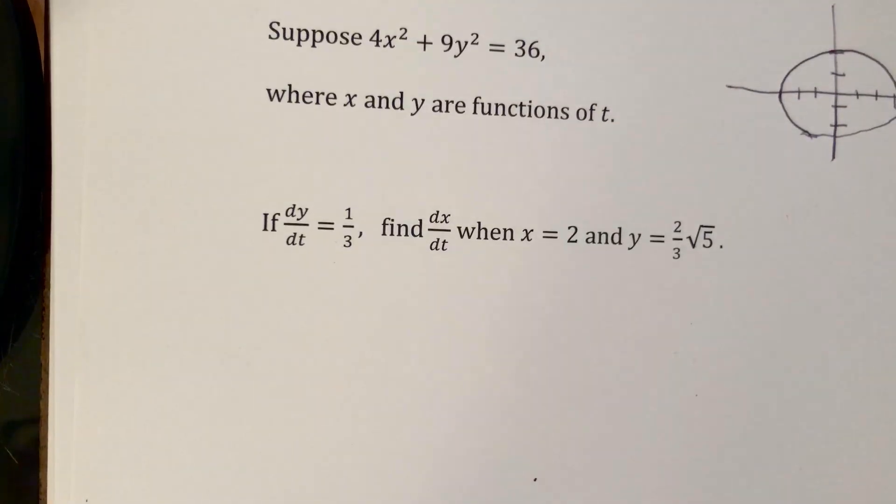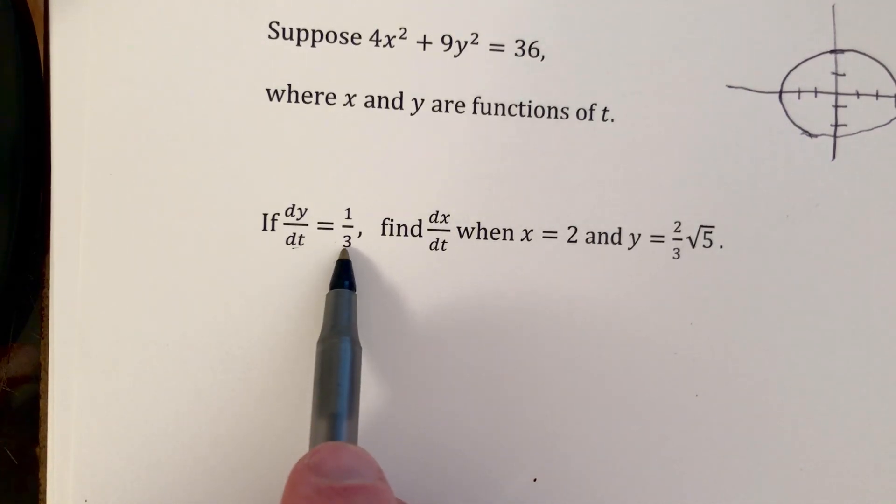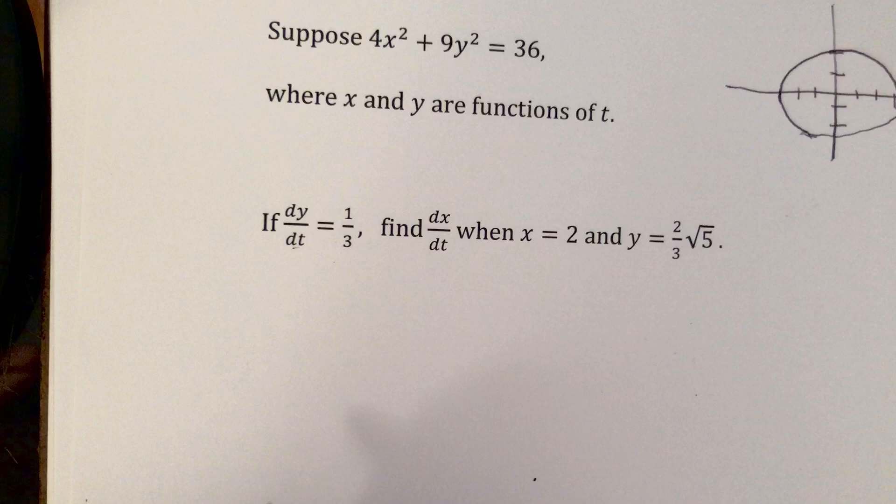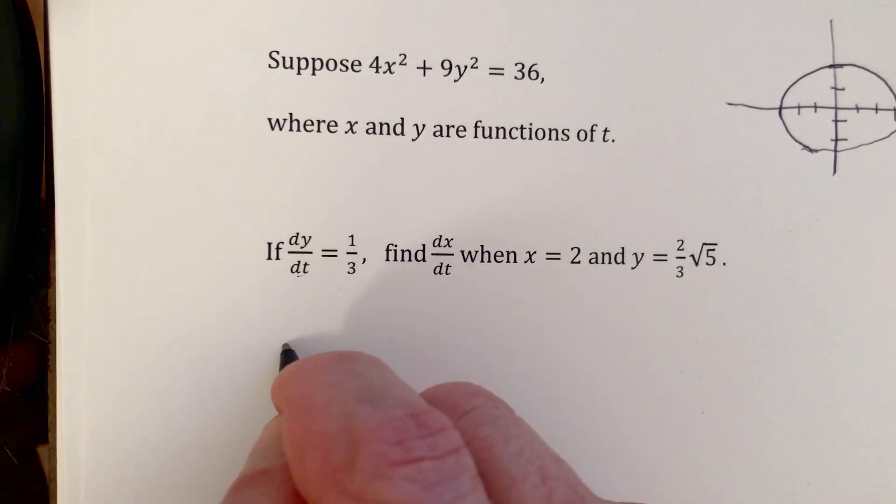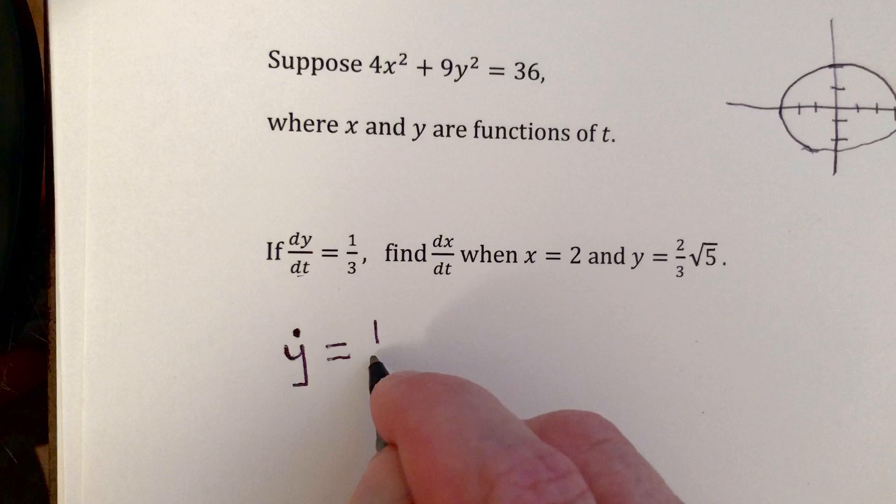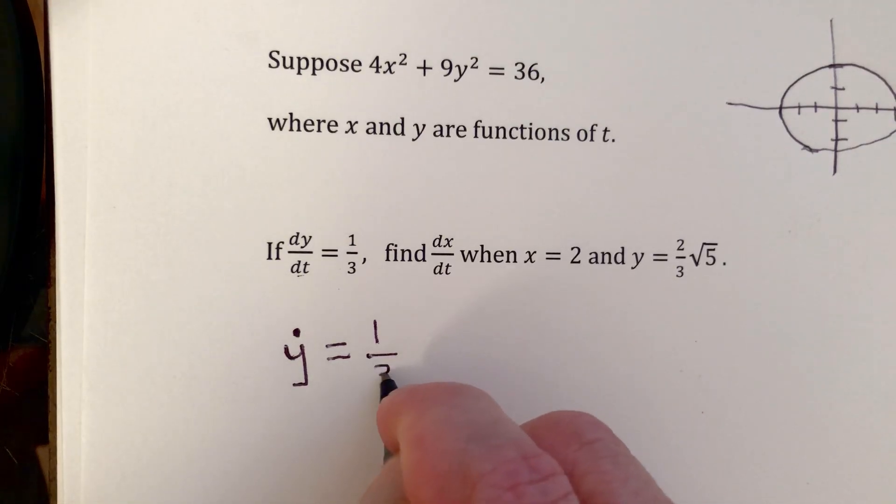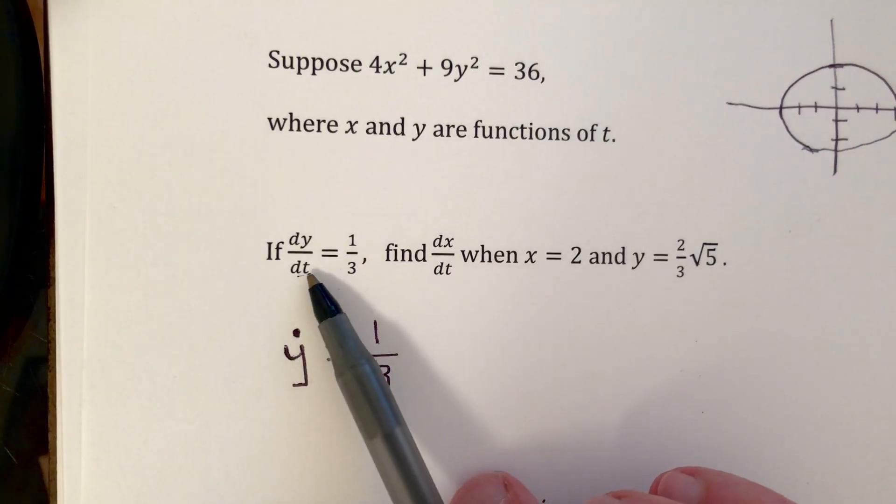So we're given dy dt equals 1 third. So what that is telling you is that at this instant, the y-coordinate is changing by 1 third. And I didn't give you any units. So maybe it is 1 third unit per second. And notice this notation. It's convenient to use a dot. So y dot means dy dt.